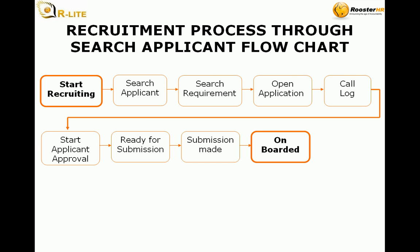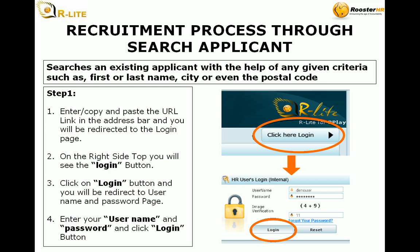The recruitment process research applicant section searches an existing applicant with the help of any given criteria such as first or last name, city, or even postal code. Step 1: Enter or copy and paste the URL link in the address bar and you will be redirected to the login page. On the right side top you will see the login button.